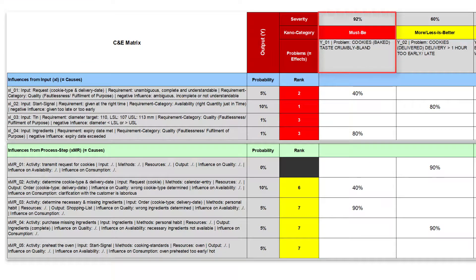In our bakery, the problem cookie-taste-crumbly-blend, for example, occurs completely independently of the time at which the start signal is given for baking. In contrast, experts estimate that the problem cookie-taste-crumbly-blend occurs in 40% of the cases if the input request for cookie type and delivery date is ambiguous, incomplete or not understandable, and in 80% of the cases if the expiry date of the ingredients is exceeded.